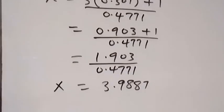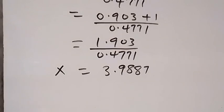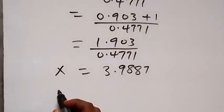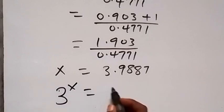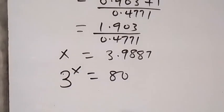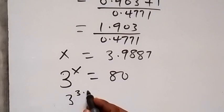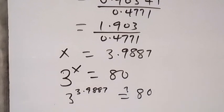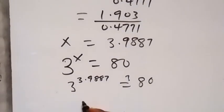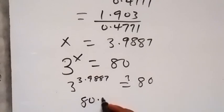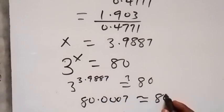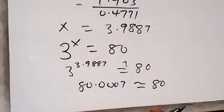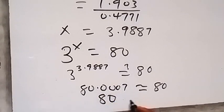To confirm, we can put this in the given equation to check. We have 3 raised to power x equals 80. When we put the value of x here, 3 raised to power 3.9887 equals 80. When we check this, we discover that this will be 80.0007, which is approximately 80. Therefore, 80 equals 80. Thus, x equals 3.9887 is a solution.